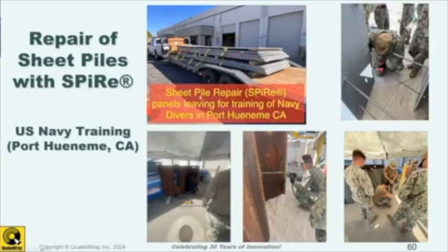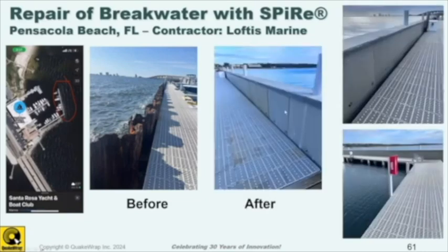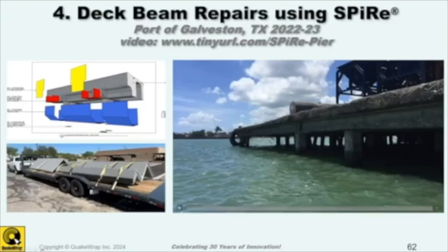Since we introduced SPIRE about six or seven years ago, it's been received quite well. The port of Melbourne in Australia is using the SPIRE system to repair one kilometer of seawall. We've also been specified for 620 meters at the port of Dubai, plus several U.S. projects. Last November we trained the U.S. military on how to install this at Port Hueneme in California. One contractor used it in an innovative way: for a severely corroded steel sheet pile breakwater, he sandwiched the existing pile between two layers of SPIRE panels with through-bolts, poured concrete around them, and added a cap beam on top — a very nice, long-lasting repair.